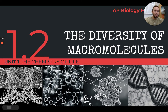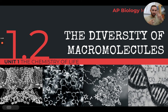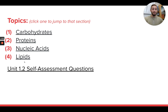Hello, you guys. In this video, we're going to be looking at the very last topic of unit 1.2, topic four. In these notes, we've been looking at these four different types of macromolecules that exist in living things, their structure, and their functions. We've looked at carbohydrates, proteins, and nucleic acids. In these notes, we're going to look at lipids and what these molecules look like and what they do.